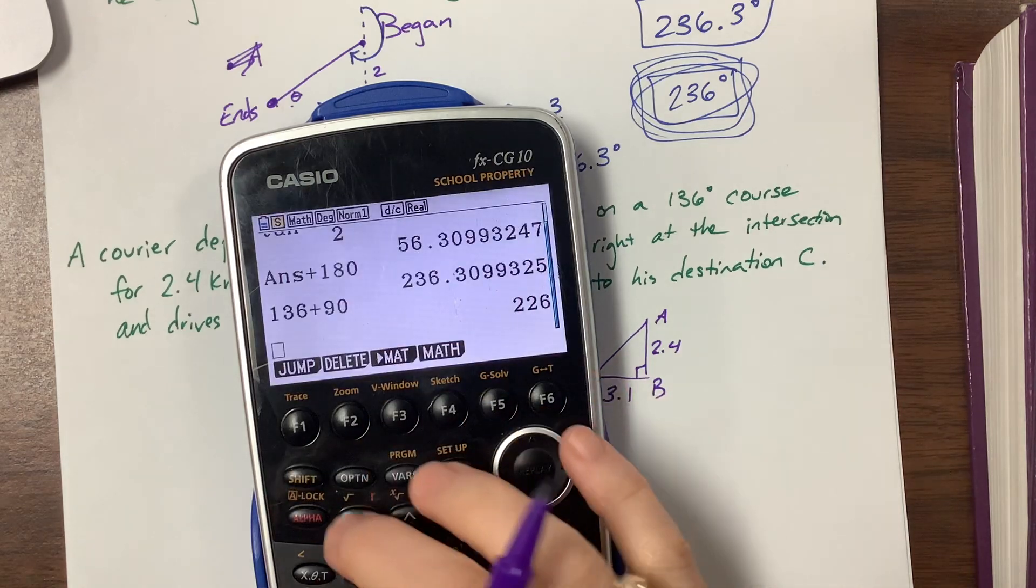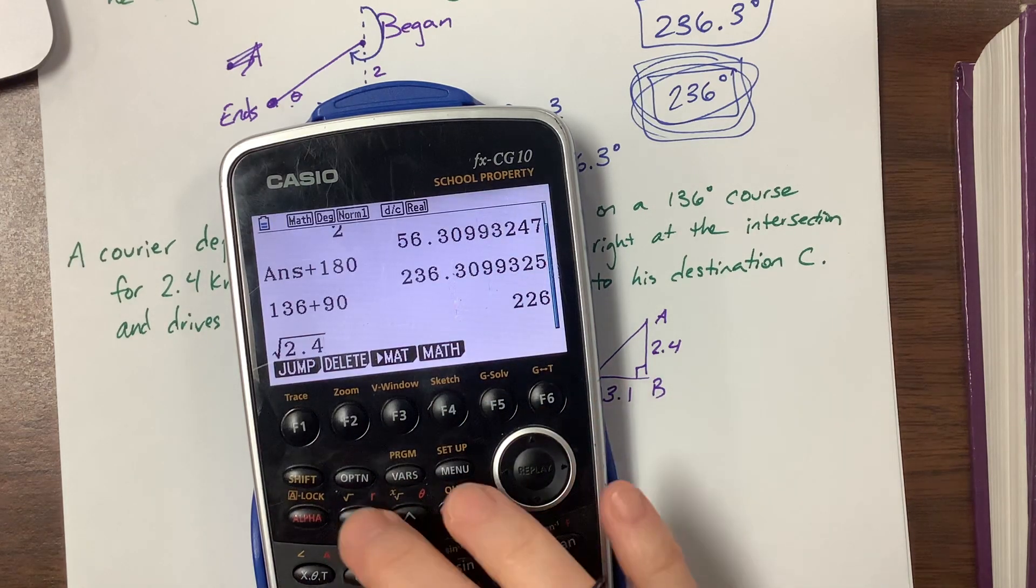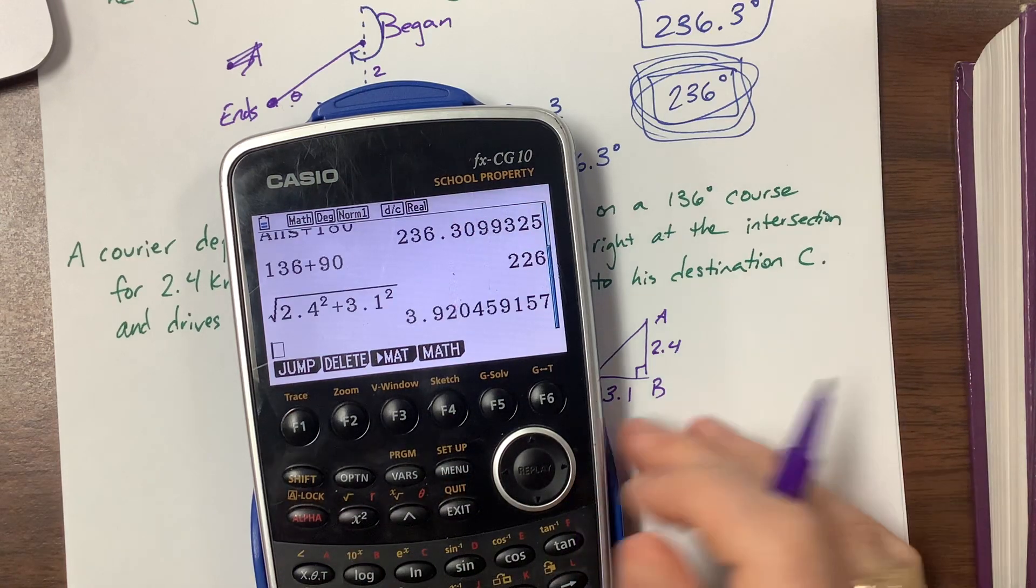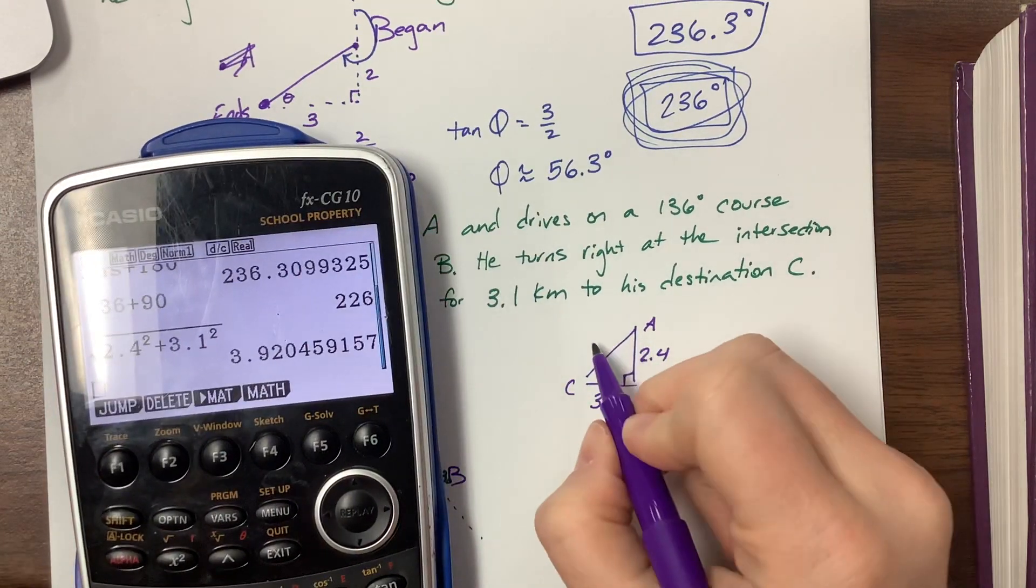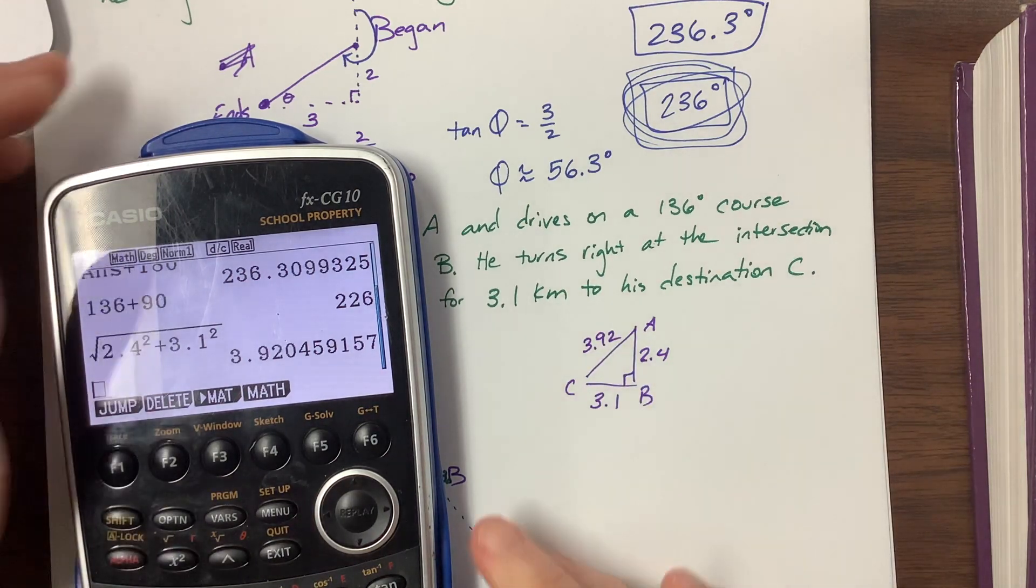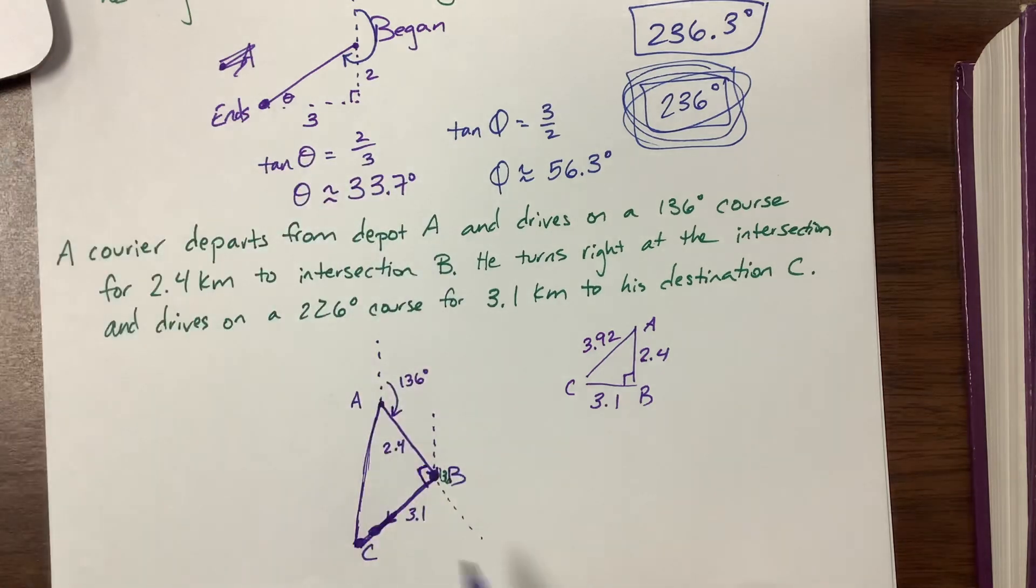Here's A and this is 2.4, and here's C and this becomes 3.1. And so I can do Pythagorean theorem and say, well, the square root of 2.4 squared plus 3.1 squared. This is about 3.92 kilometers. So the distance between A and C is 3.92.